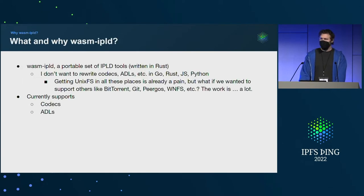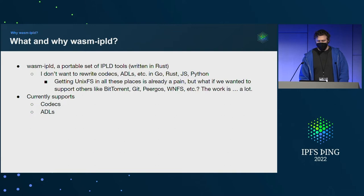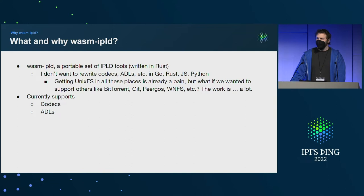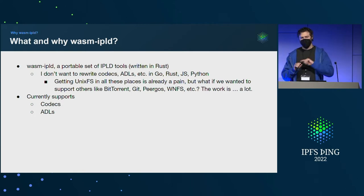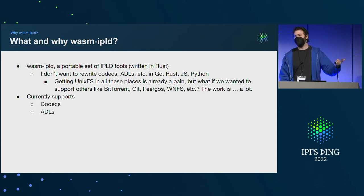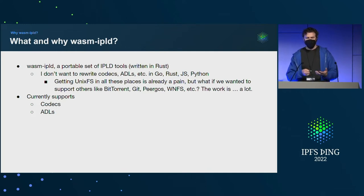So why? There are lots of reasons why you might want to use IPLD and lots of reasons why you might want to use WebAssembly. What I wanted was a portable set of IPLD tools written in Rust, because I don't want to rewrite codecs and ADLs in Go, Rust, JavaScript, Python, and wherever else. The idea of getting UnixFS readable in all these platforms where you can certify your self-certified data yourself is already hard. And what if we want this to work with BitTorrent, Git, Pergus, WinFS, and more? It's just a lot.